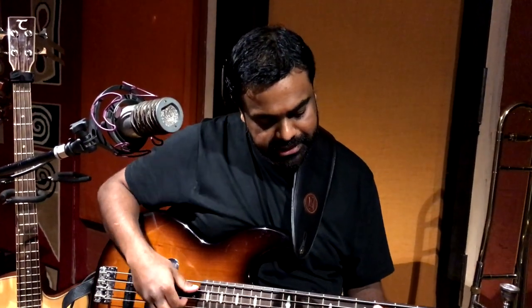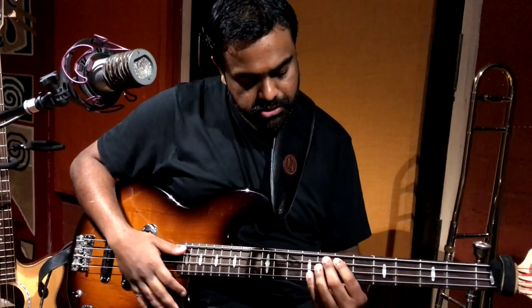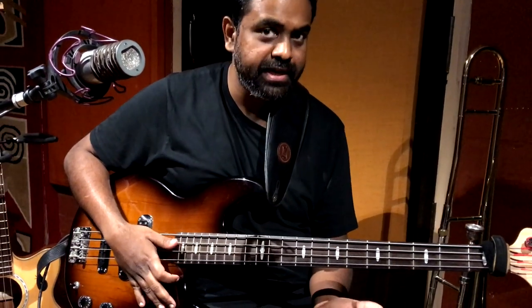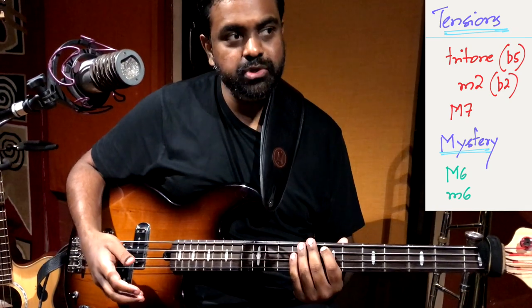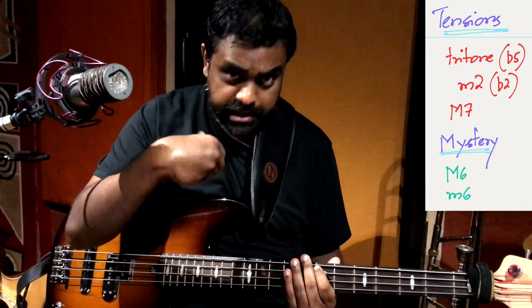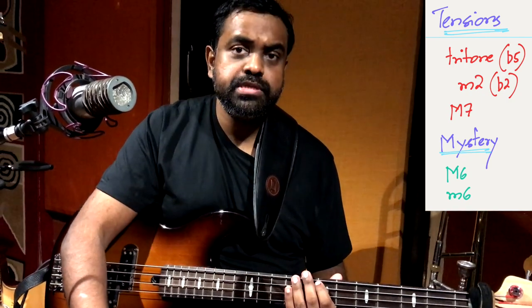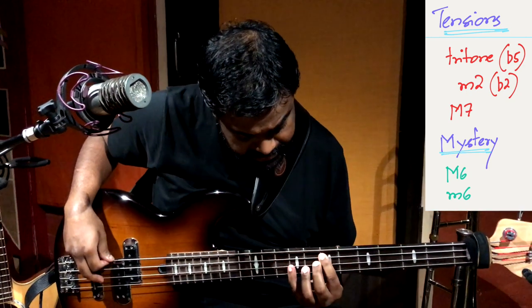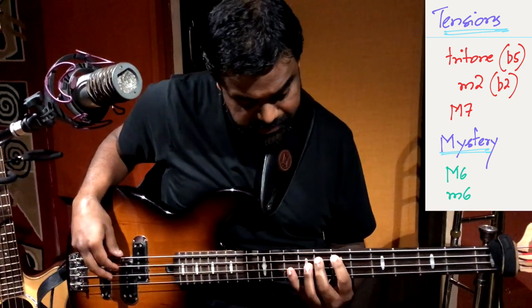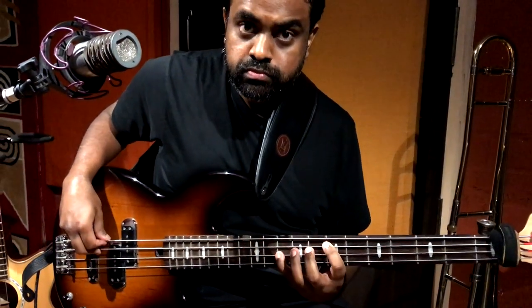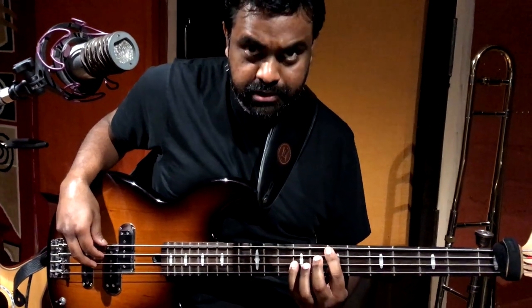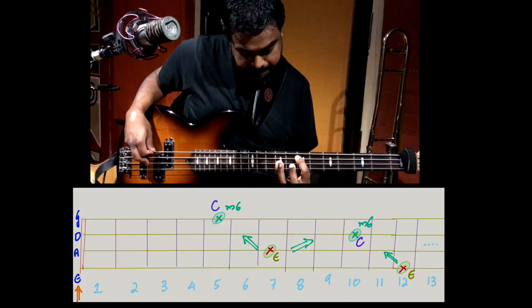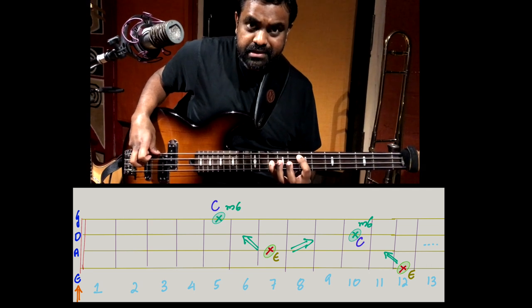So we've learned the tritone, minor second, and major seventh. Two more intervals I consider 'mysteries' because you can use them in many circumstances — sometimes they feel like a resolution, sometimes like a tension, sometimes like an anticipation. Let's look at the minor sixth from E. The fifth you already know, and the minor sixth is right above it — perfect fifth plus one fret. You feel that tension, that mystery.